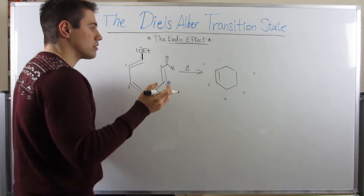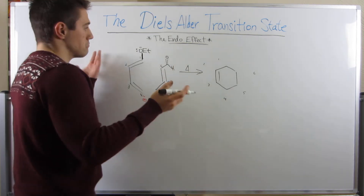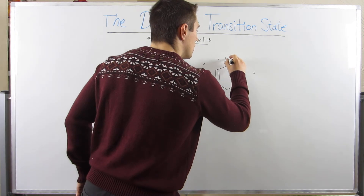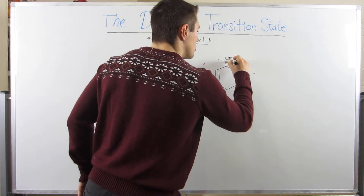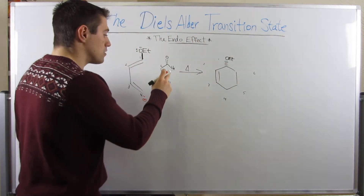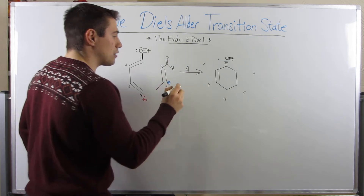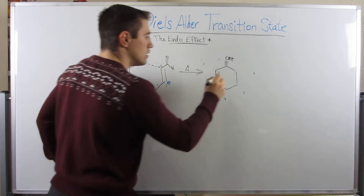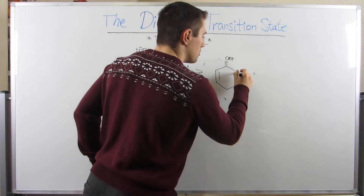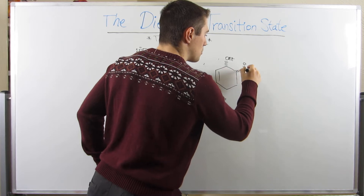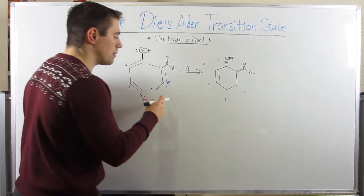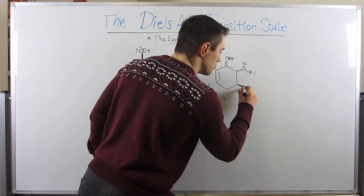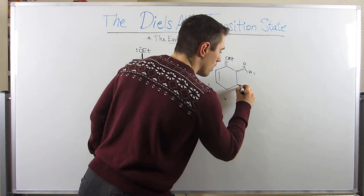So let's just arbitrarily make out-groups dashes. Why not? Okay, so 6 is also an out-group, right, because here is our pocket. 6 is an out-group. And since we picked dashes for our out-groups, that means this in-group is a wedge.